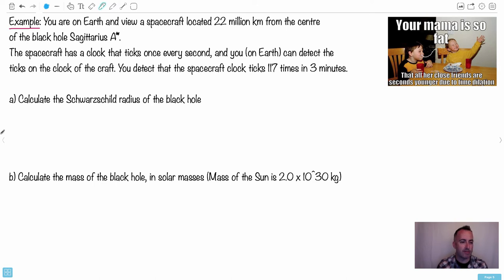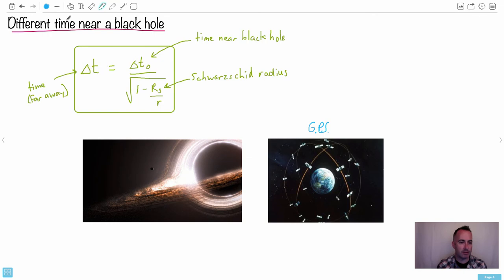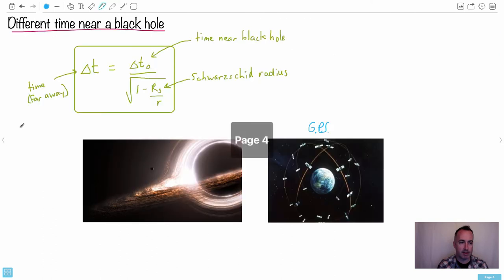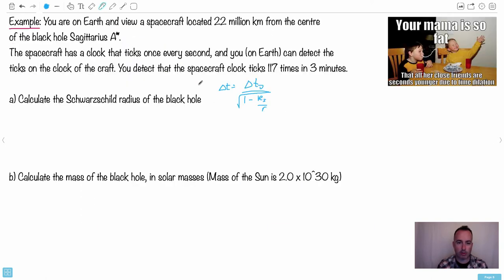First of all, we need this equation here. Delta T equals delta T zero over one minus Rs over R, and it's square rooted. Let's look at which letters are which. We have time from far away, that's what we're measuring on Earth. That's going to be the Earth time. Whereas this one here, that's going to be the time measured by someone close to it, the person who's close to the black hole. Their time is going to be, let's maybe do it for one second. We'll just figure out how long is one second.